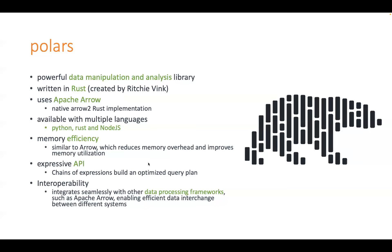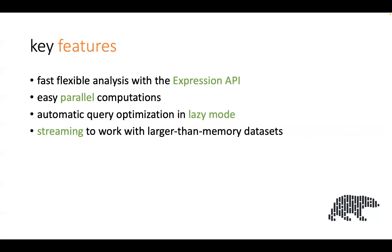Polars has an expressive API. It makes use of all the cores in your computer to execute any operation — unlike Pandas, which is mostly skewed towards one core. You don't get much parallel execution with native Pandas, although there are additional modules that can help. Polars is natively parallel.